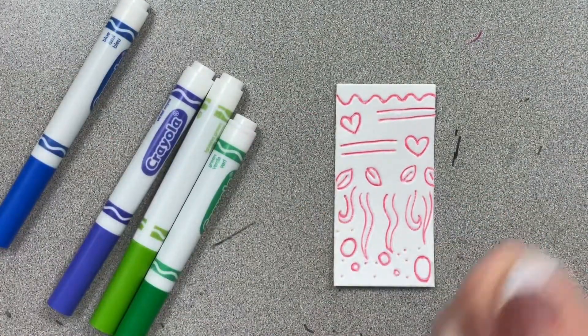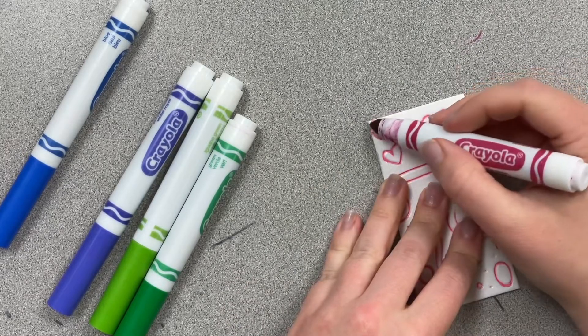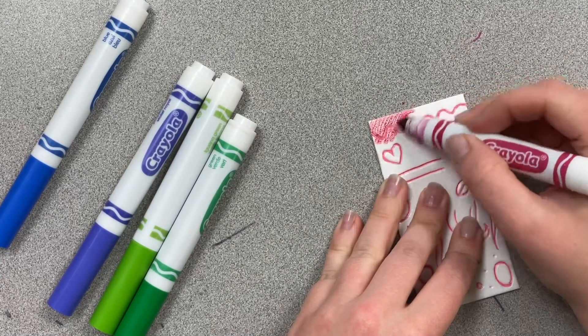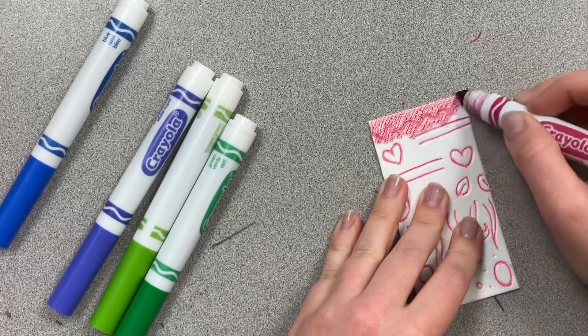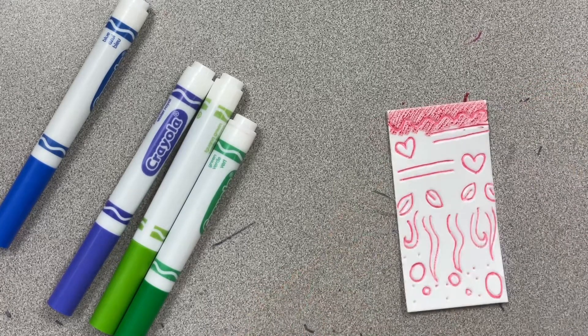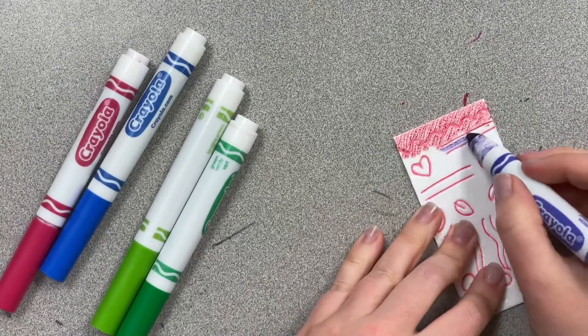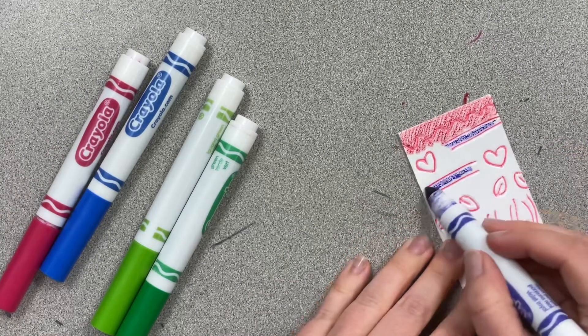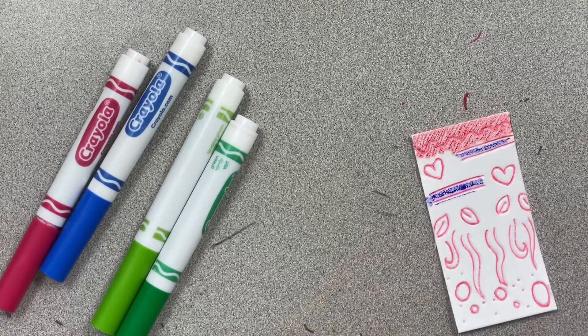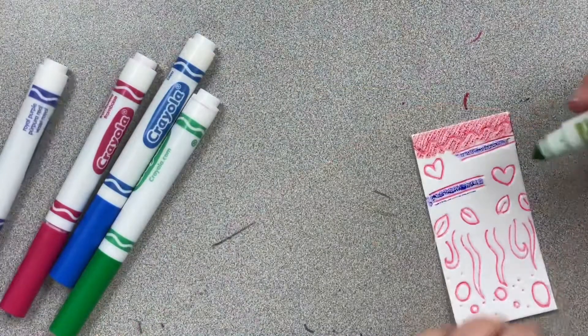The next part is to take markers and color over our designs. You can stay inside your lines or you can color straight over them and it really is up to you. What's going to happen is our lines are going to show up no matter how we color because we've indented them into the foam.